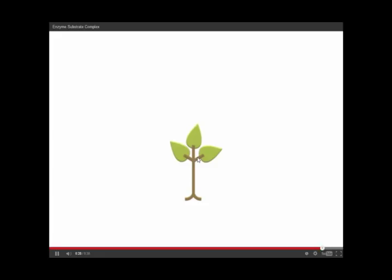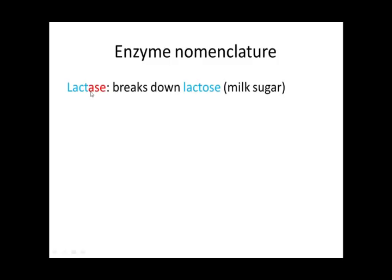Let's talk about enzyme nomenclature — that's just a fancy word for naming. Enzymes almost always have an '-ase' ending, so if you see a molecule with an '-ase' ending, it tells you it's an enzyme. The other part of the name tells you what that enzyme does. For example, lactase — the enzyme we'll use in lab — breaks down lactose, the sugar found in milk.